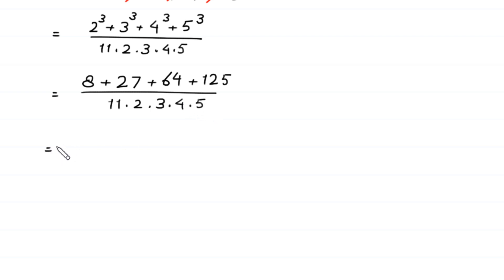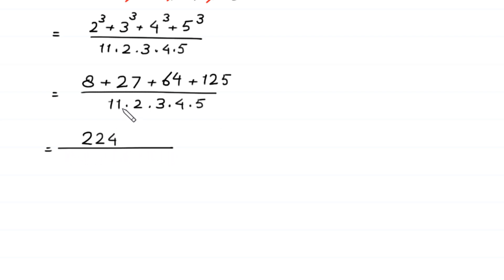Next, 8 plus 27 plus 64 plus 125 equals 224, divided by 11 times 2 times 3 times 4 times 5.